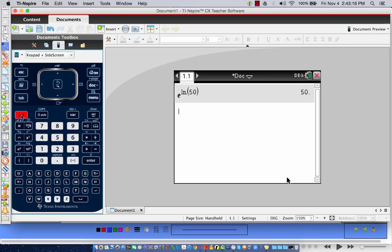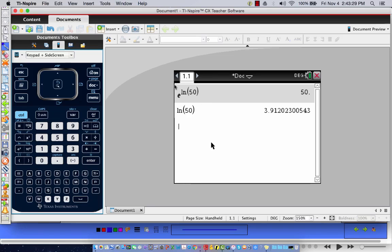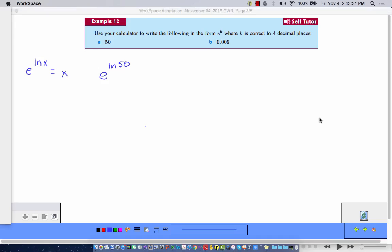And I get 50. But now I'm just going to take, I just wanted to show you that, I'm going to take the natural log of 50. And I get 3.9, 1, 2, 0, blah, blah, blah. Let's take a picture of that.